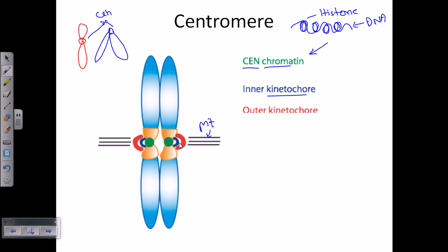The red region is the outer kinetochore, present on the outer side. The kinetochore is a specialized structure so that microtubules can hold on to the chromosome, because microtubules are growing and shrinking all the time during cell division. It is very important to create a structure so that during disassembly of microtubule, it remains attached with the chromosome. So the outer kinetochore and inner kinetochore together are dedicated for interaction of the centromere and chromosome with the microtubule polymer.